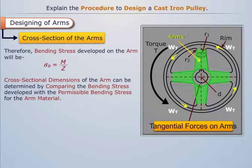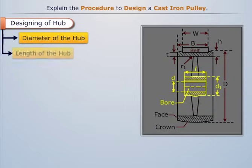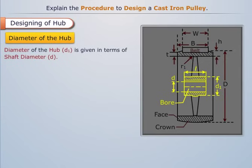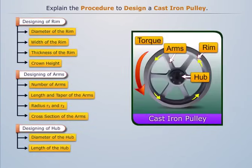Finally, let's design the hub by determining its diameter and length. The diameter of the hub is expressed in terms of the shaft diameter, and the value of hub diameter should not exceed 2d. The length of the hub can be determined using the appropriate expression, and the length of the hub should not be less than the specified minimum value.